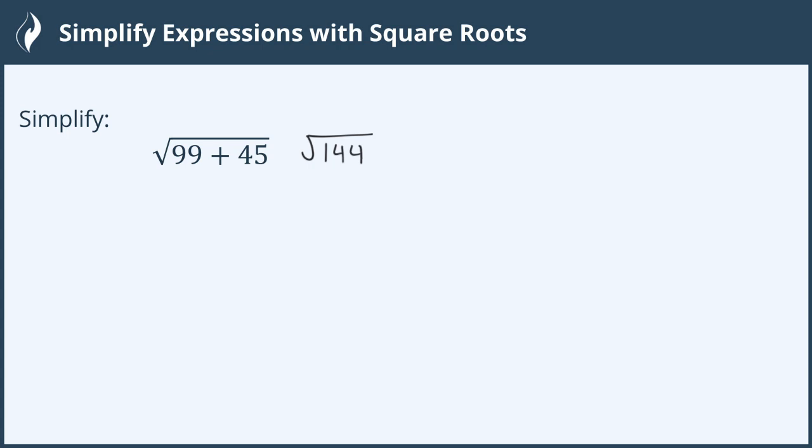Then we want to simplify that. So the square root of 144 means: what number multiplied by itself equals 144? The answer to that would be 12.